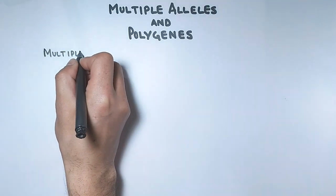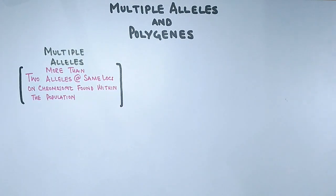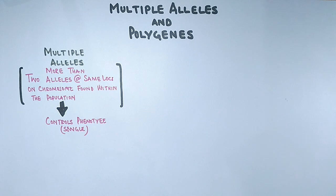First of all, let's see what multiple alleles are. It's when more than two alleles at same loci within the population control a single phenotype. Keep this thing in mind: it's within the population, not within an organism, because the individual has only two alleles for a gene at loci for a single character.